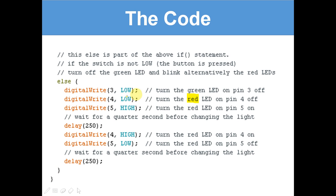digitalWrite 3 LOW turns the yellow LED on pin 4 off. digitalWrite 5 HIGH turns the red LED on pin 5 on. So that's turning the red LED on - turning red first. Wait a quarter second before changing the light. delay(250) - it's in milliseconds. That's a quarter of a second.